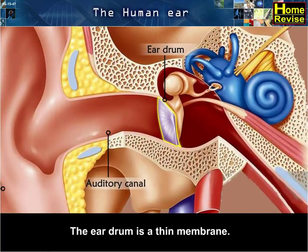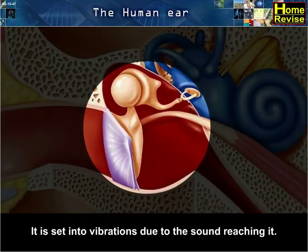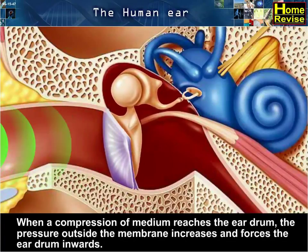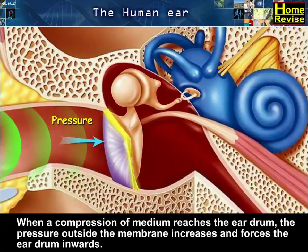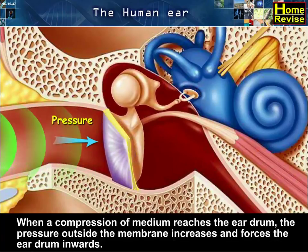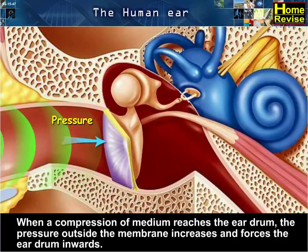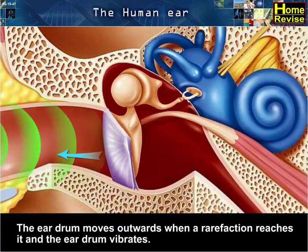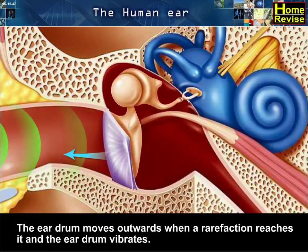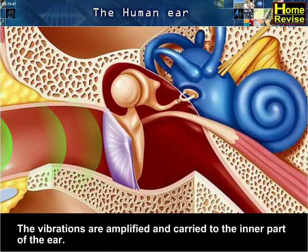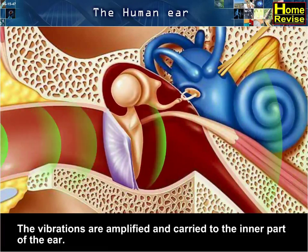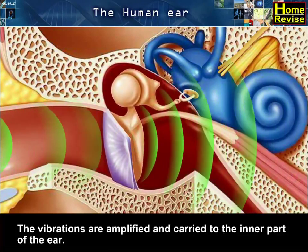The eardrum is a thin membrane. It is set into vibrations due to the sound reaching it. When a compression of the medium reaches the eardrum, the pressure outside the membrane increases and forces the eardrum inwards. The eardrum moves outwards when a rarefaction reaches it, and thus the eardrum vibrates. These vibrations are amplified and carried to the inner part of the ear.